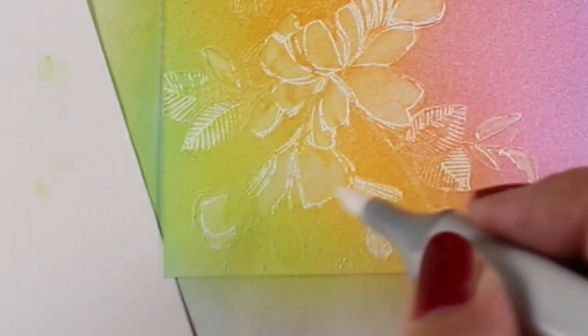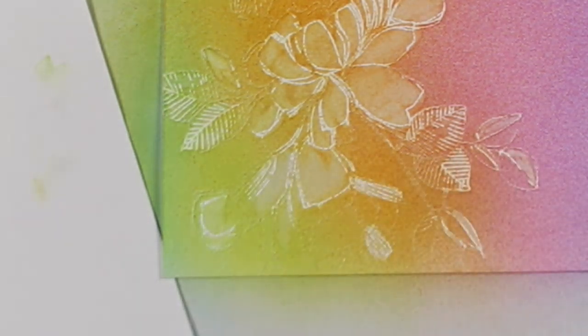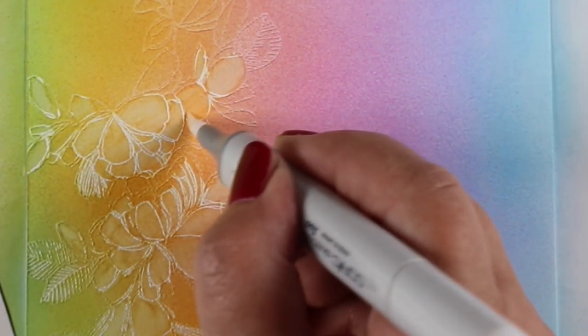So you can choose which way you want to go. But super soft, super elegant, and really easy to do. Because you're really just removing color from off of that embossing.